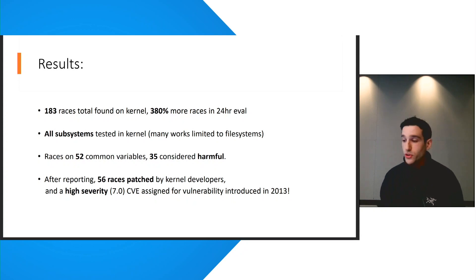Second, our approach can easily be applied to all kernel subsystems, so we're not limited to testing a single module or file system. Third, in terms of security impact, we found 102 races with possible harmful effects and after reporting, 56 of them were patched by kernel developers. And these races are clustered on 52 common variables and 35 of those variables were considered harmful.